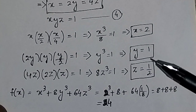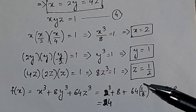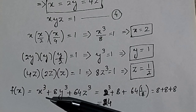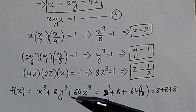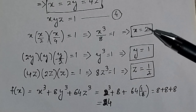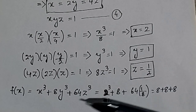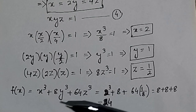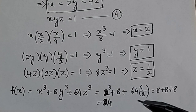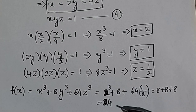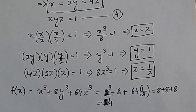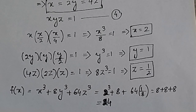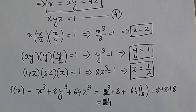Substitute x = 2, y = 1, z = 1/2 into the objective function x³ + 8y³ + 64z³. This gives the extreme value of the objective function, which equals 24. In this way you can find the constrained extremum using the Lagrange multiplier method.